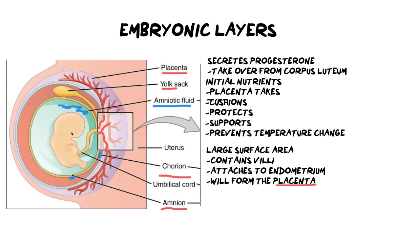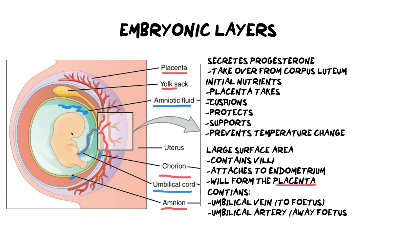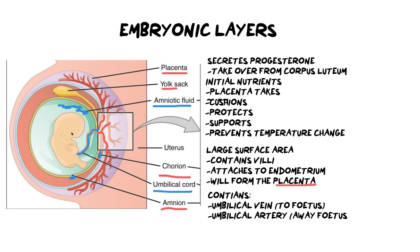Lastly, the umbilical cord comes out of the embryo or fetus and attaches to the placenta. It connects the fetus to the mother and contains two important blood vessels: the umbilical vein, which goes to the fetus, and the umbilical artery, which moves away from the fetus. For exams, you will need to label a diagram like this and provide the functions for these layers, though you won't be asked to draw it.